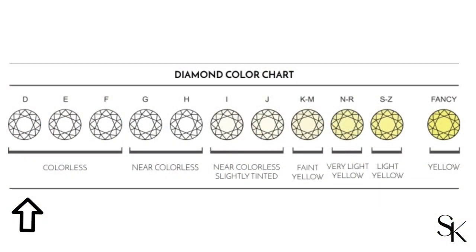The next C is color. The color scale starts at D and goes all the way down to Z. D, E, F is considered colorless, then G through J is near colorless, and after that it gets warmer and warmer all the way down to Z, which becomes yellow. After that is the fancy yellow color scale, but that's another story for another day.